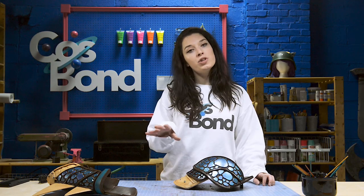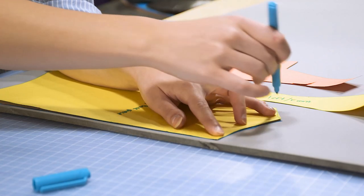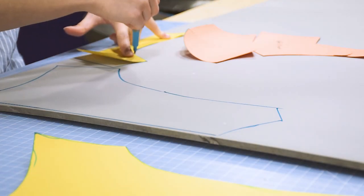Begin by tracing your patterns onto your foam. If your foam has a textured side, make sure to flip the pattern so that the texture is on the inside of the armor.